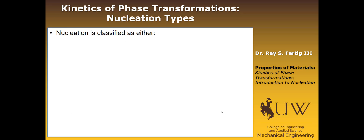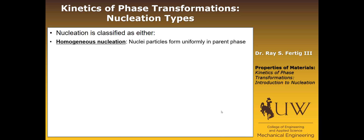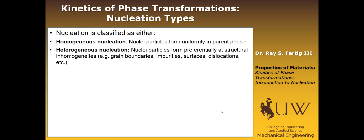Nucleation is going to be classified as either homogeneous nucleation — where the nuclei particles are going to form uniformly in the parent phase with no biasing of where they form, they just sort of form randomly — or heterogeneous nucleation, which occurs when the nuclei particles are going to form preferentially at structural inhomogeneities.